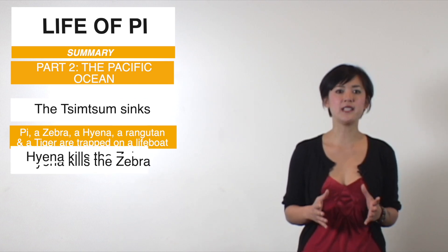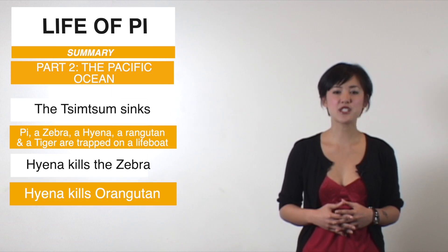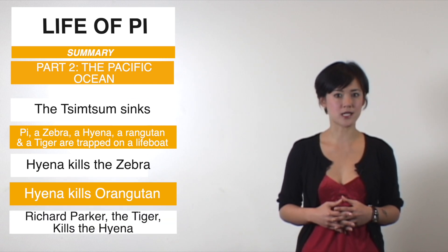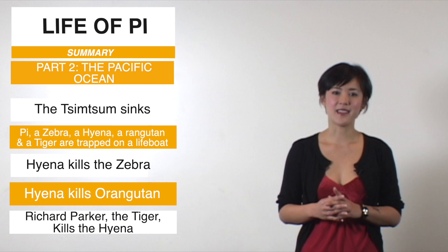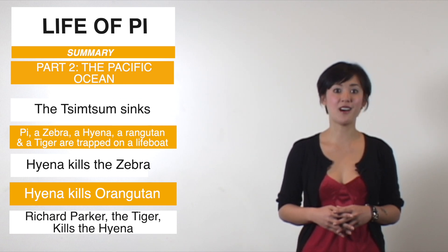The zebra is injured, so the hyena kills it first. The hyena then kills the orangutan. And in Chapter 53, Richard Parker, the tiger, kills the hyena. That means from Chapter 53 until 94, when they make landfall in Mexico and Richard Parker disappears into the jungle, Pi is all alone on a raft with a hungry tiger.